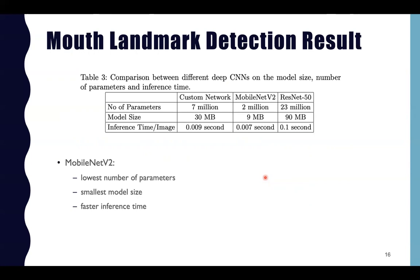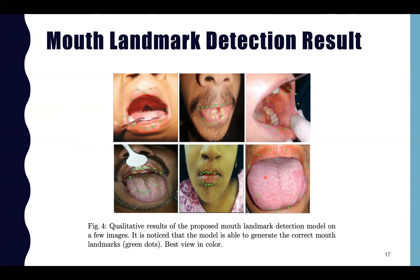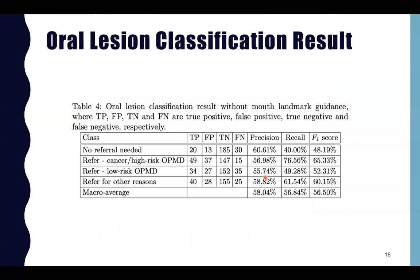The qualitative results are shown in Figure 4, demonstrating that our proposed mouth landmark model can generate correct mouth landmarks across different angles of the oral image. To show the efficacy of our proposed mouth landmark guidance, we present the quantitative classification results with and without mouth landmark guidance in Tables 4 and 5.